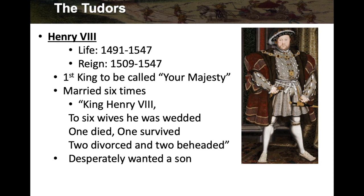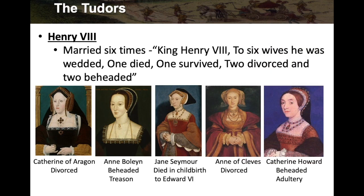The reason for the six marriages was that Henry desperately wanted a son. This was very consuming to him — he wanted a son to pass on the heir, which was very important in those days for a king. They would blame the queen if she did not produce a son.